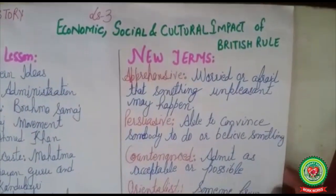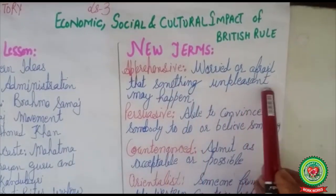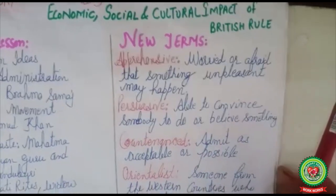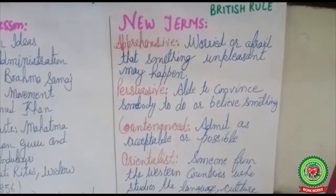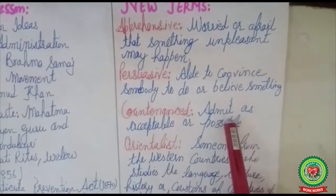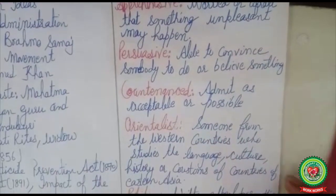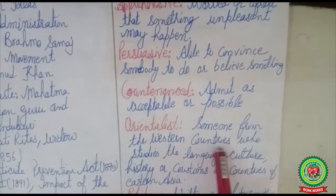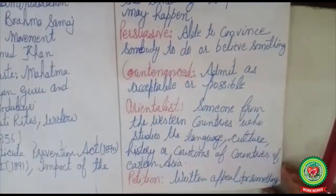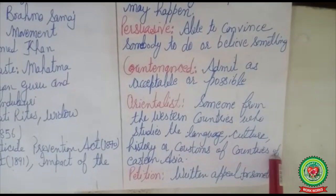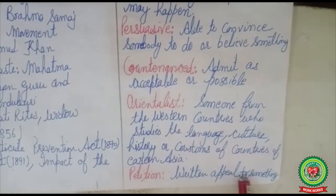Before going ahead, let us discuss the new terms of the lesson. 'Apprehensive' means worried or afraid that something unpleasant may happen. 'Persuasive' means able to convince somebody to do or believe something. 'Countenanced' means admitted as acceptable or possible. 'Orientalist' refers to someone from western countries who studies the language, culture, history, or customs of eastern Asia. 'Petition' means written appeals for something.